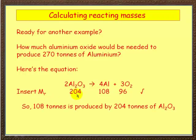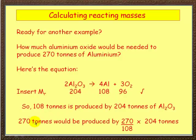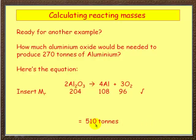So what do we know? If we've got 204 tons of that, we get 108 tons of that. Hmm. But we're asked how much to produce 270 tons, so if we want 270 tons of this, how much of that will we get? Let's have a look, shall we? 270 tons would be produced by 270, where does that come from? Question. 108, where does that come from? It's the relative molecular mass there, times 204. Where does this come from? Over here. Can you see how straightforward this is? 270 over 108 times 204, which equals 510 tons.